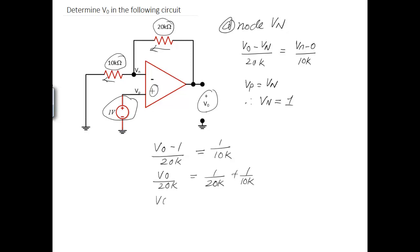So solving for V0 we get 20K over 20K plus 20K over 10K. And this gives you 2 plus 1 which is equal to 3V. That is the output of the op amp circuit under the ideal op amp approximation.